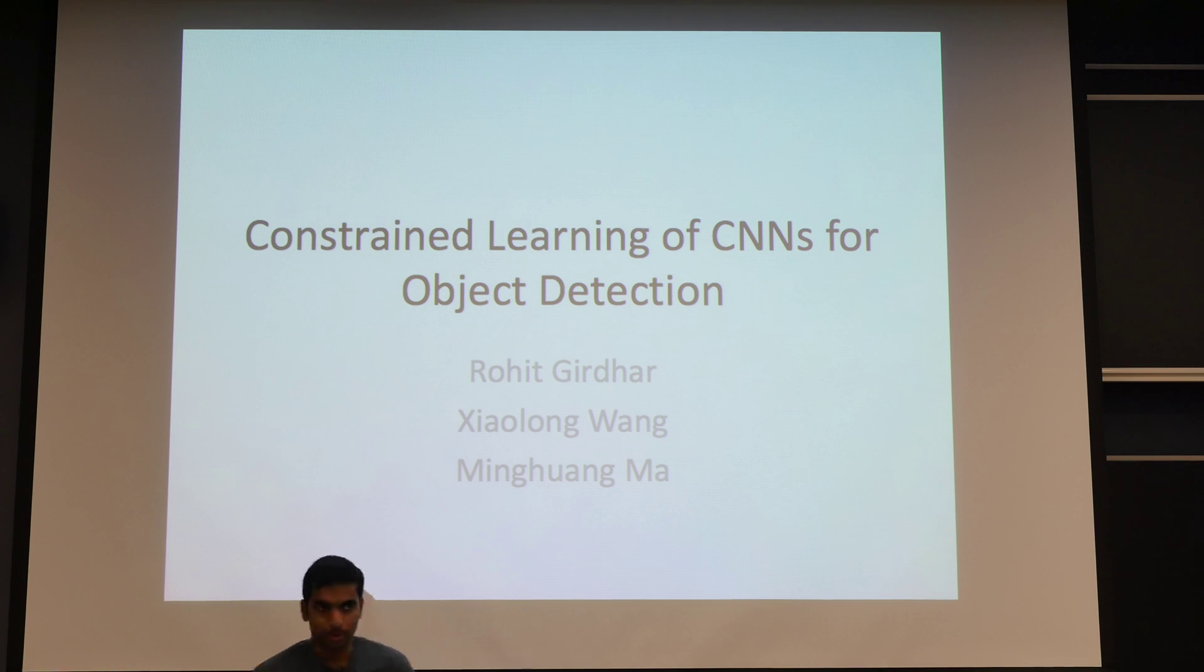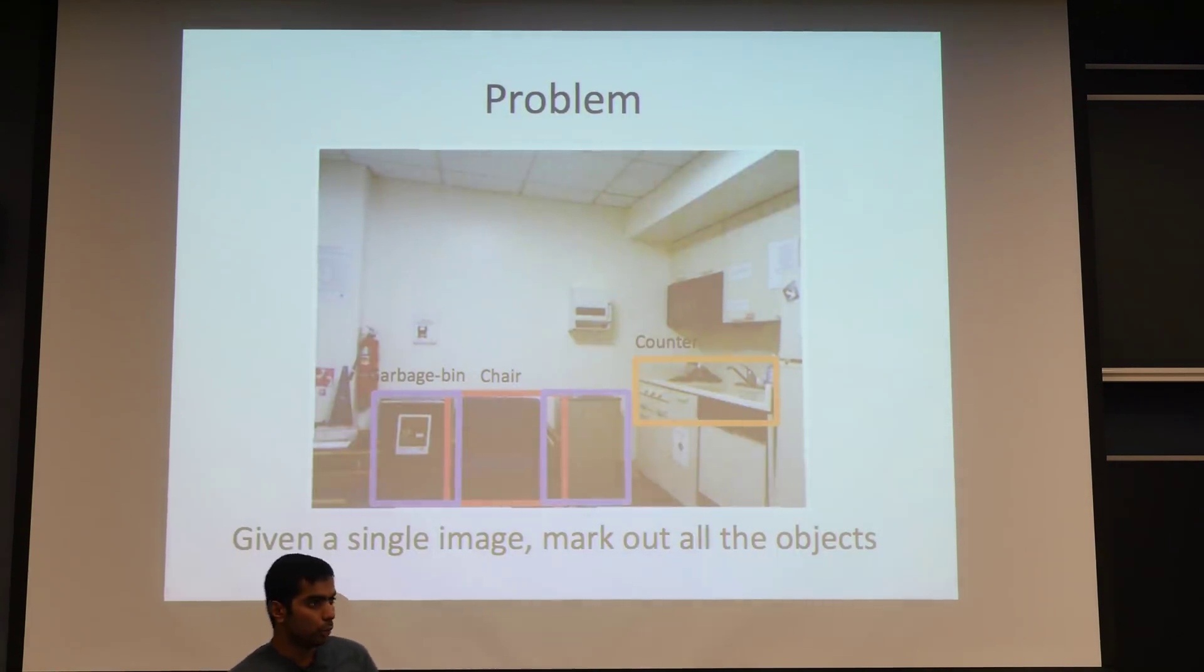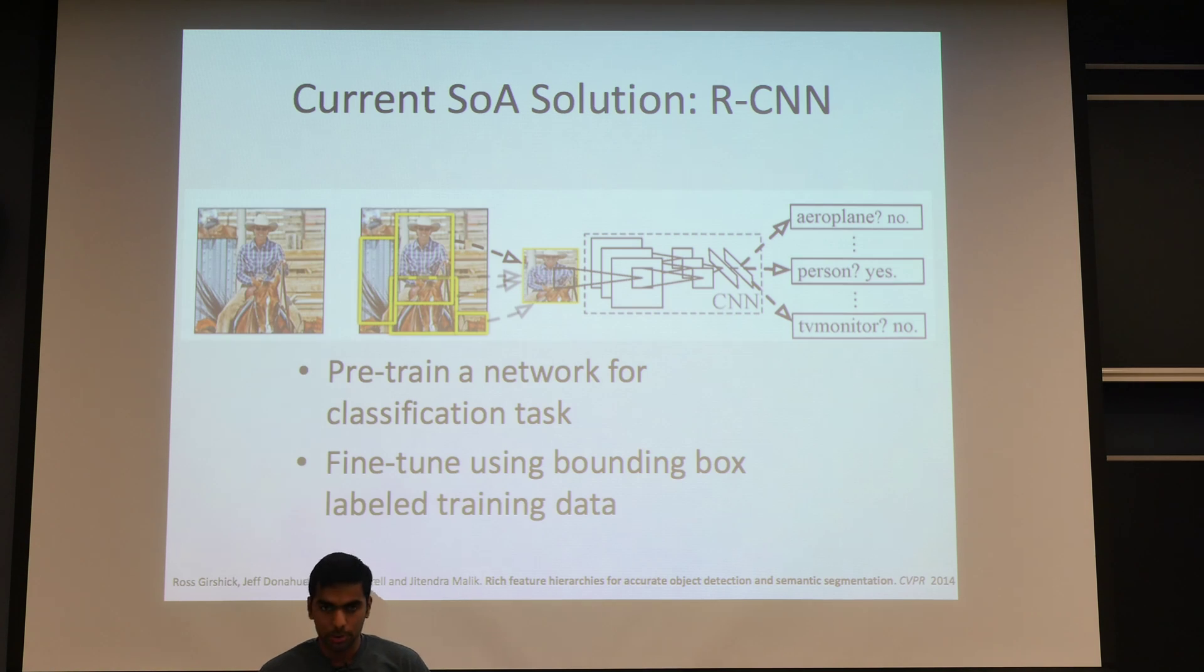Hello everyone, I'm presenting our work on constraining the learning of CNNs for the task of object detection. To present an overview of our task, we're basically given a single image and we want to mark out all the objects in the image, the exact spatial extent of each of the objects. This is a standard age-old problem in computer vision and a lot of things have been tried over the years.